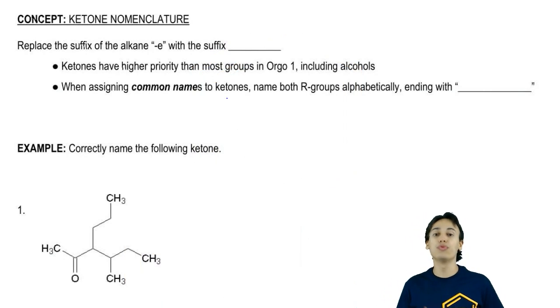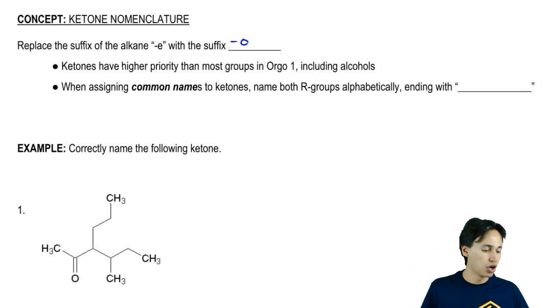Ketones are going to modify the root name of a carbon chain. You're going to take out the e ending of the carbon chain and replace it with the suffix one.